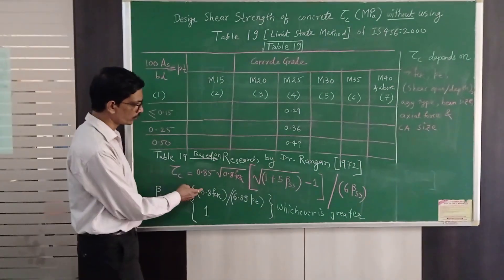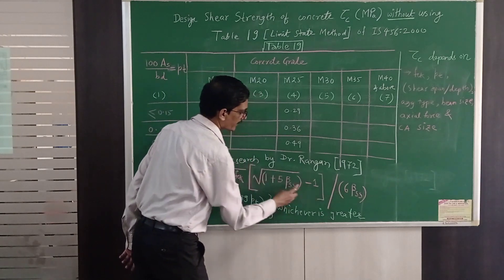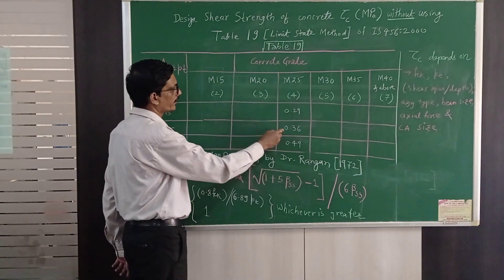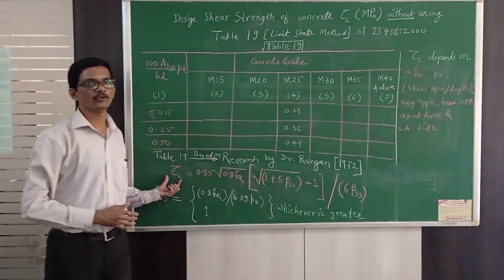So suppose I take 1.2 then I have to substitute that value of 1.2 beta ss here and here, wherever there is a beta ss term and already you will know the grade of concrete fck as M25. So after doing that directly I get the value of tau c.